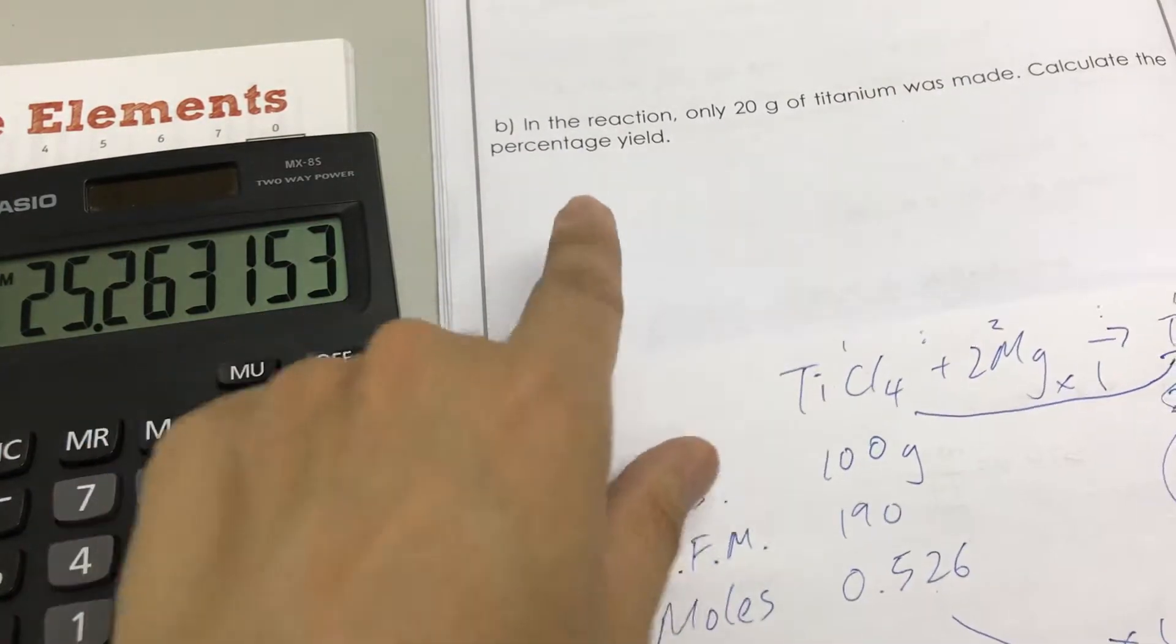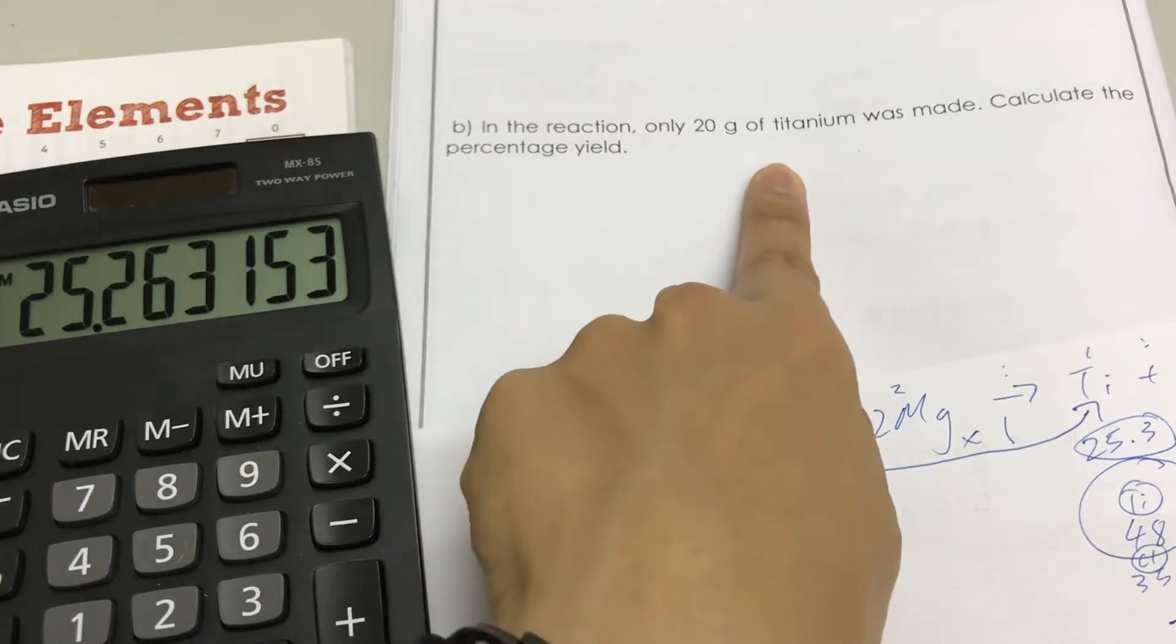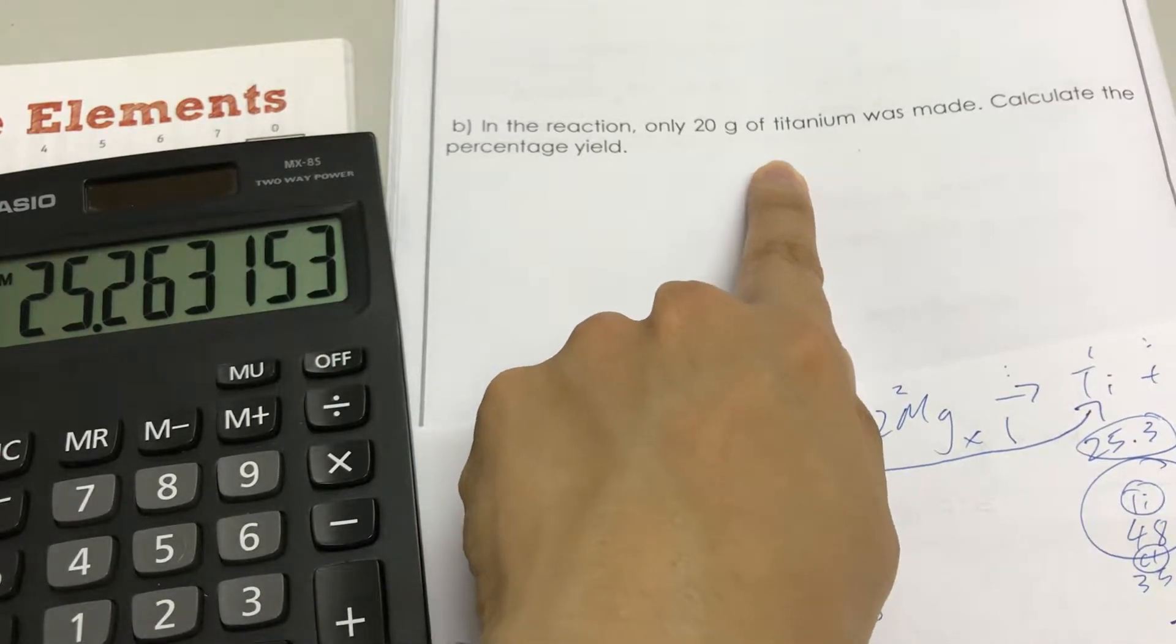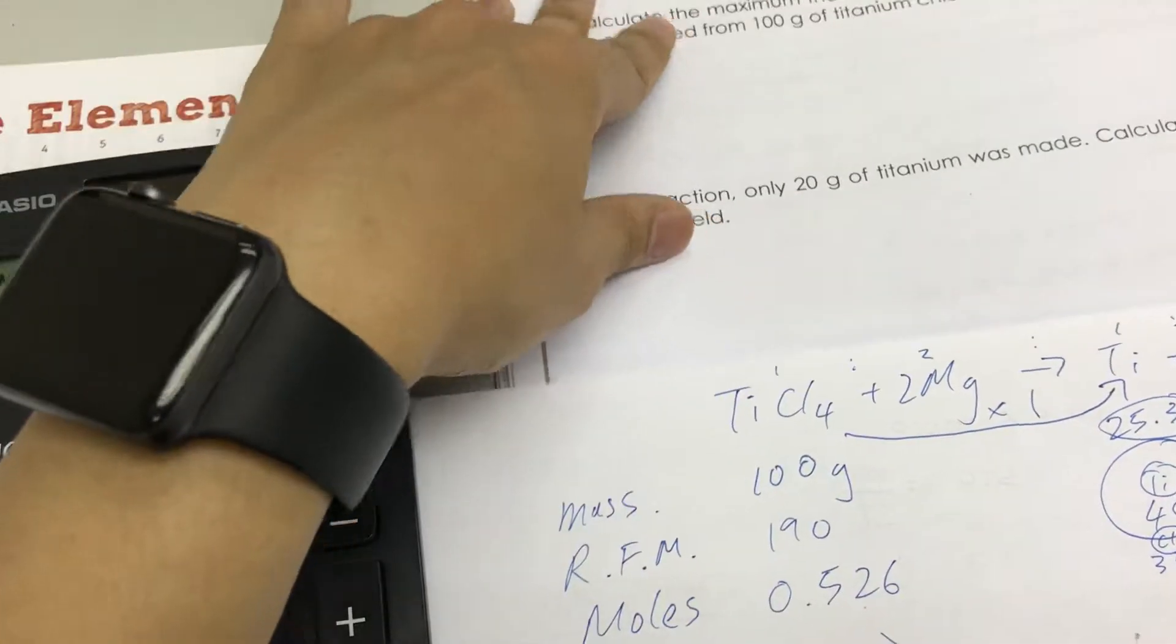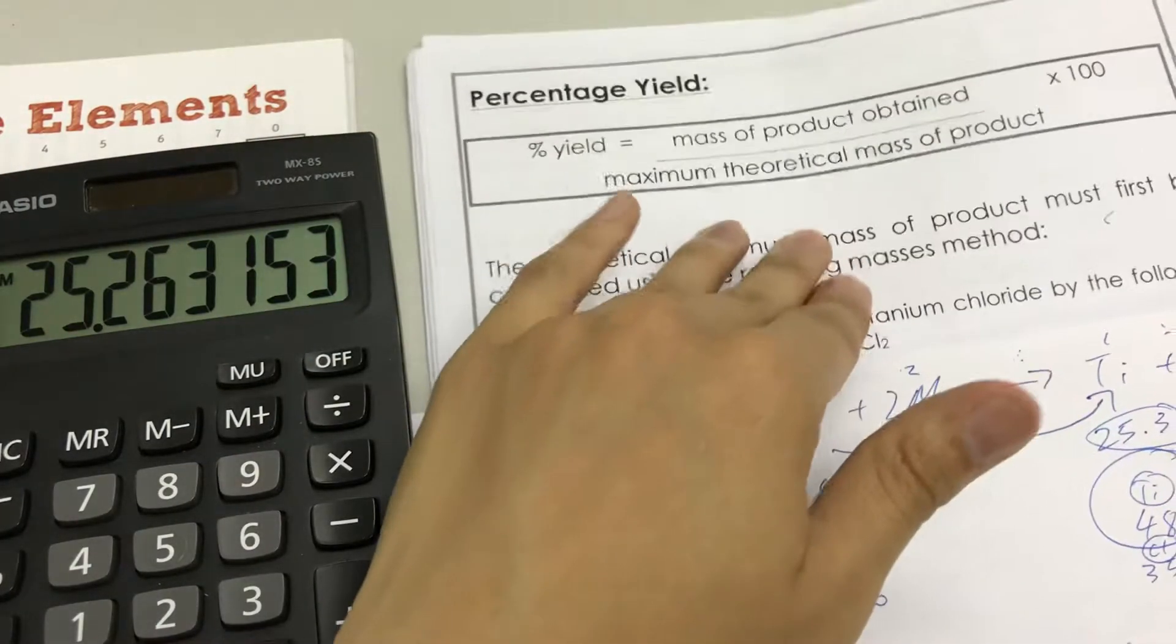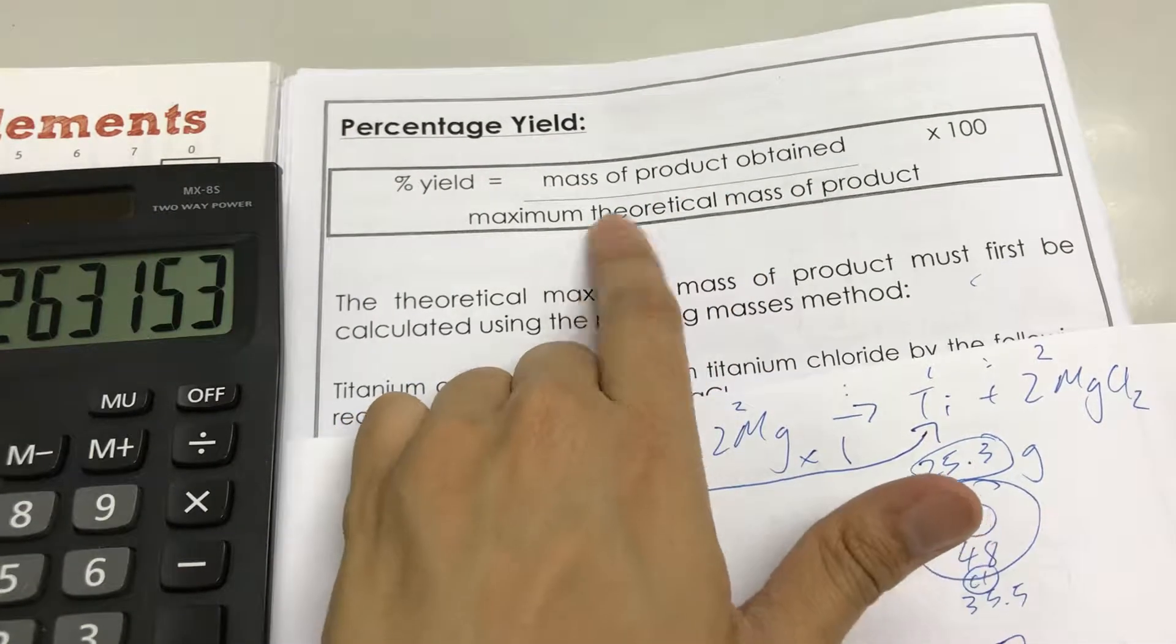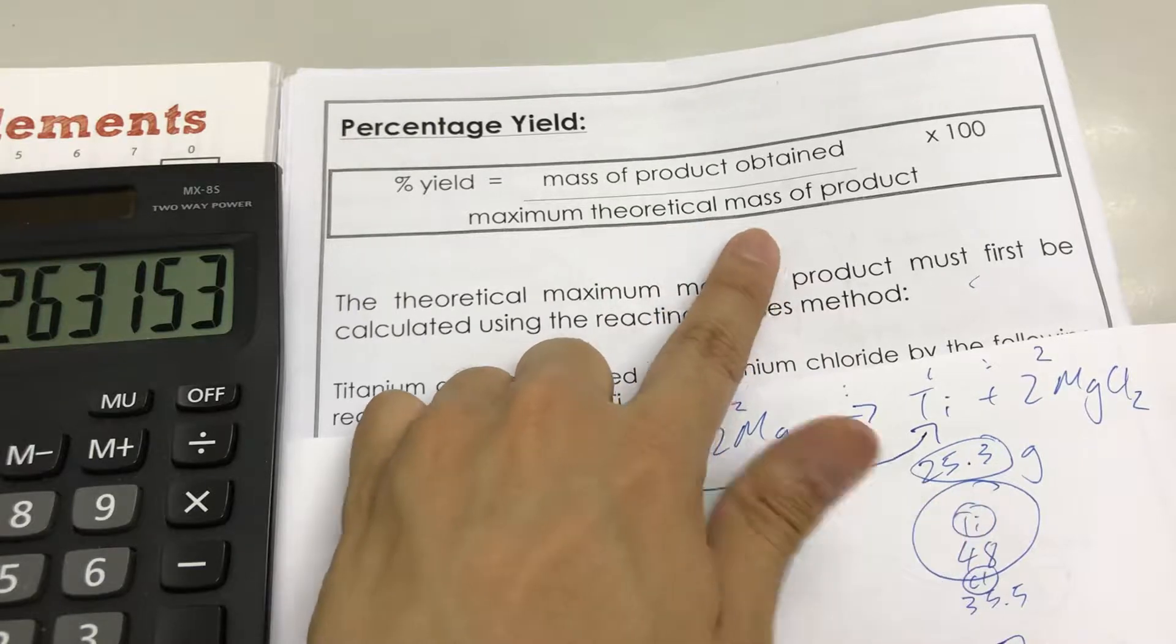But now for part b, in the end only 20 grams of titanium were made. You now need the percentage yield. The percentage yield, as you can see from the top, is the mass of product obtained divided by the maximum theoretical mass of product.